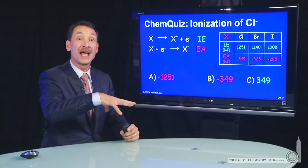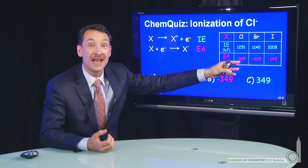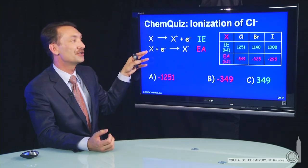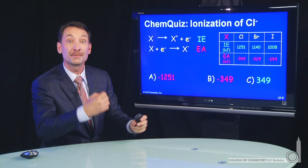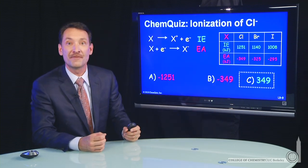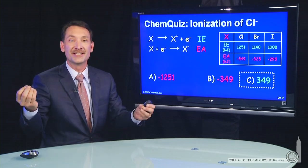If you reverse a reaction, you take the opposite of the energy. So the electron affinity for chlorine atoms is minus 349. Therefore, the ionization energy of Cl minus is plus 349. For this reaction, it takes 349 kilojoules per mole to remove an electron from Cl minus.